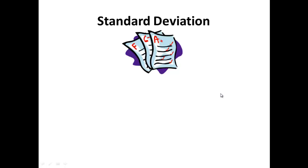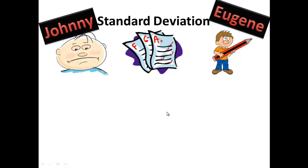All right, this word, standard deviation, is very, very important to help you describe the spread of data. But let's just use an example. Here's Johnny, and here's Eugene.